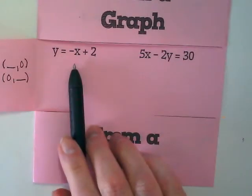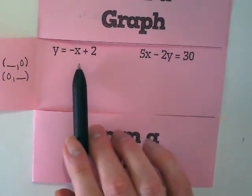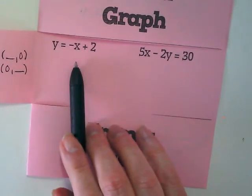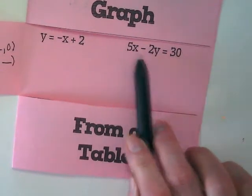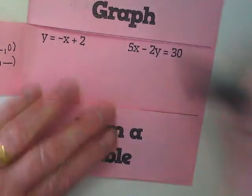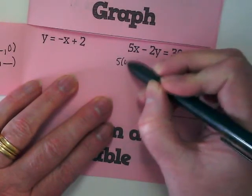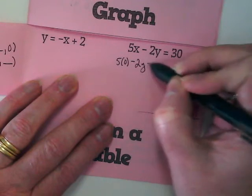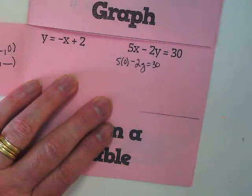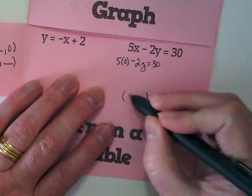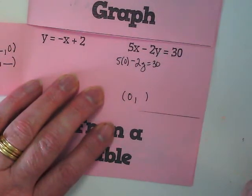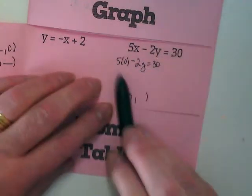Is this first one in standard form? No. It's in slope-intercept form. So we're going to ignore this one for a second and work with this one, and then we'll come back over here in a minute. This is in standard form. I've got ax plus by equals c. If I change that x to a 0, what's 5 times 0? 0.